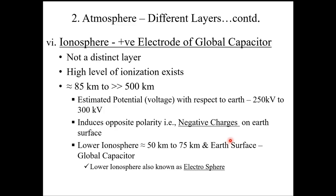The low ionosphere extends from approximately 50 kilometres to 75 kilometres above Earth's surface. We call this the global capacitor. The low ionosphere is also known as the electrosphere because of its electrical charge domain.